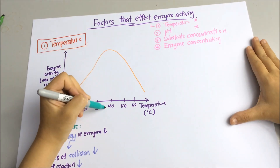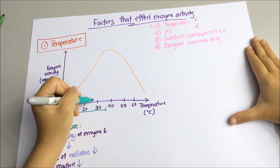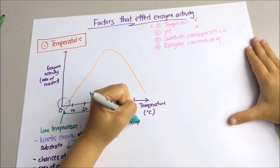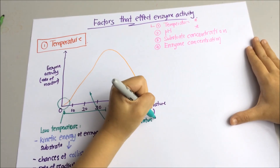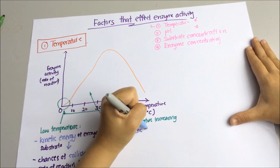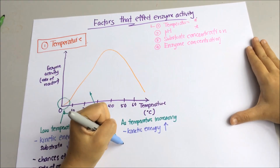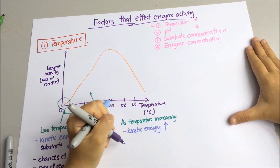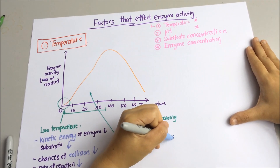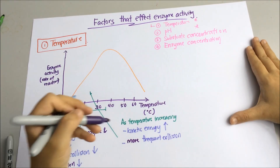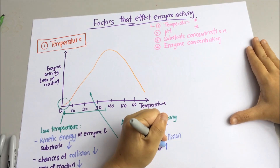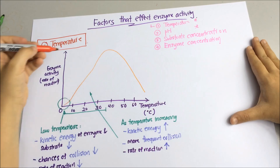As the temperature increases, the rate of enzyme reaction also increases. Very frequently in your exam, they will ask you to explain why. This is because the kinetic energy of enzyme and substrate molecules increases as the temperature increases, so both will move faster and the chances for them to collide and bind are higher.